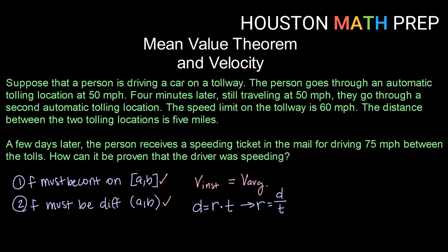Now in this particular case, we know that the distance between the two tolling locations is five miles. And our time that it took us to go from one tolling location to the other was four minutes. Now when we talk about velocity, we're often talking about miles per hour. So I want to take four minutes and divide by 60 minutes in an hour to get hours. So that my speed will be in miles per hour, five divided by four over 60 gives me 75 miles per hour.